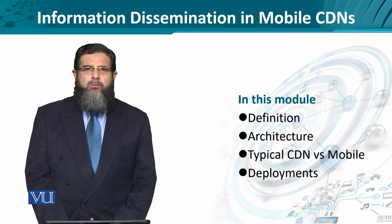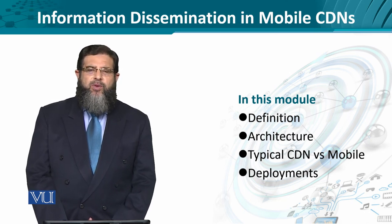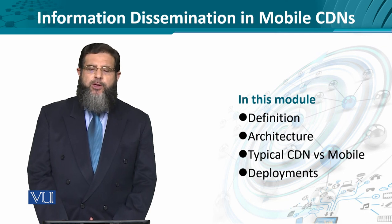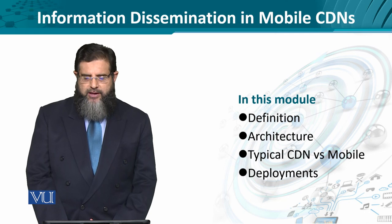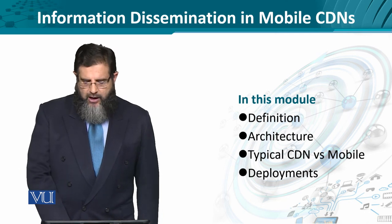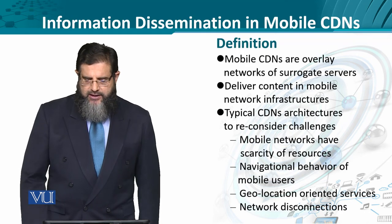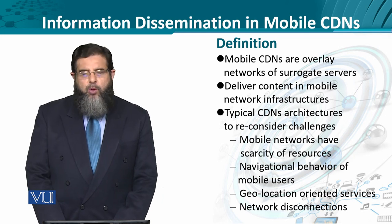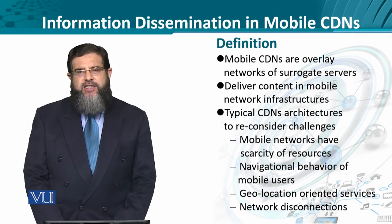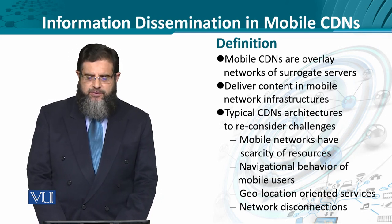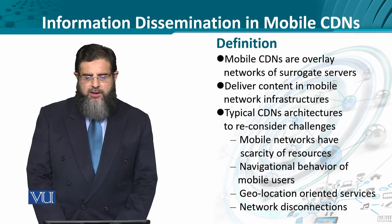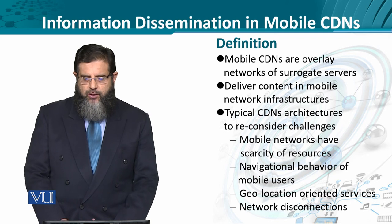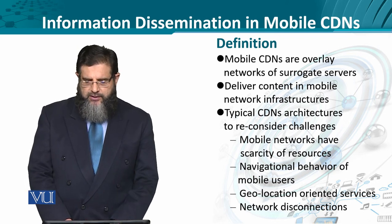We are talking about mobile users, and the content delivery network for mobile users is termed as mobile CDNs. We'll take a formal definition and look at the architecture and some more details. Mobile CDNs are basically surrogate servers — as you understand, the origin server, once burdened, needs some kind of support of surrogate servers.